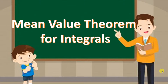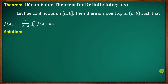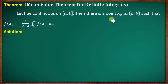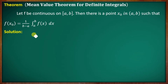Now we discuss the mean value theorem for integrals. The statement: Let f be continuous on the closed interval [a, b]. Then there is a point x₀ in the open interval (a, b) such that f(x₀) = (1/(b−a)) ∫ₐᵇ f(x) dx.